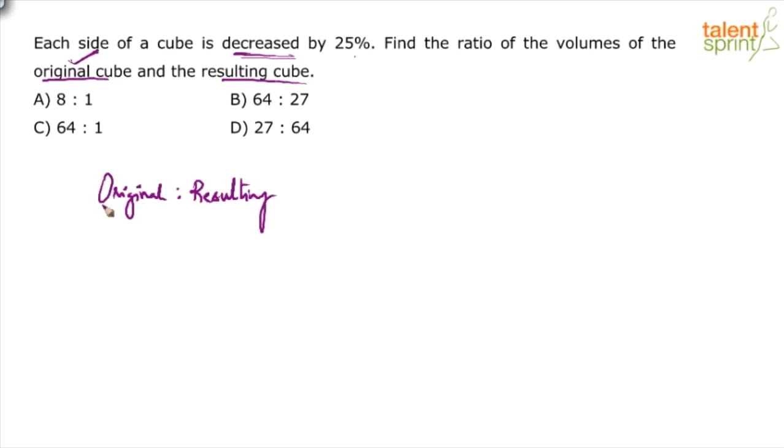When you know that original cube is going to be bigger, how can you mark option D as the answer? Option D is wrong. 27 and 64 shows that the first term is smaller than the second term.